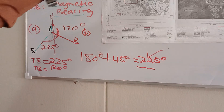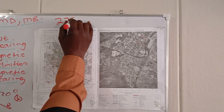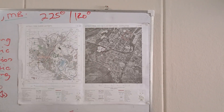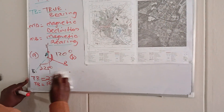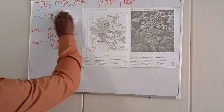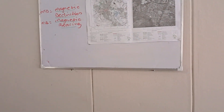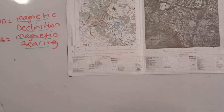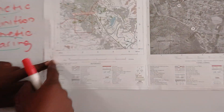I'm going to write those two bearings at the top because I'll need them when I calculate my magnetic bearing. I'll write 225 degrees and also 120. I can use one of these. Now that you know how to calculate your true bearing, the next concept you can be assessed on is your magnetic declination.